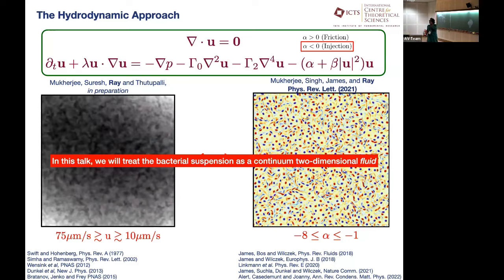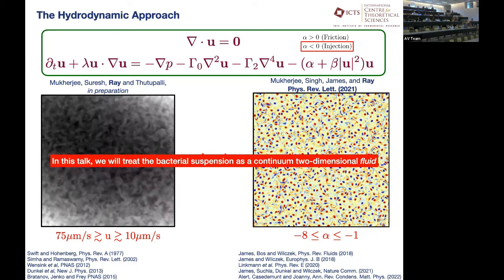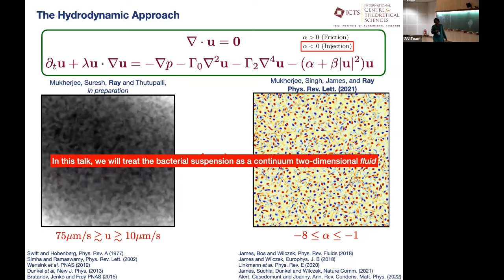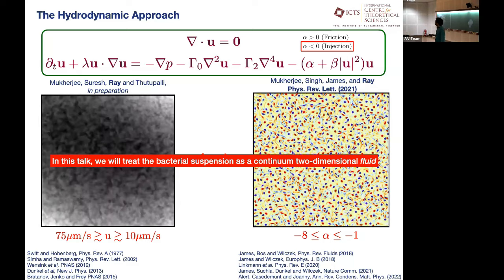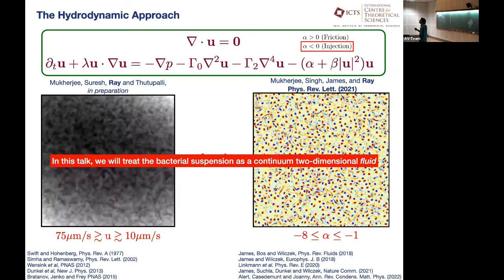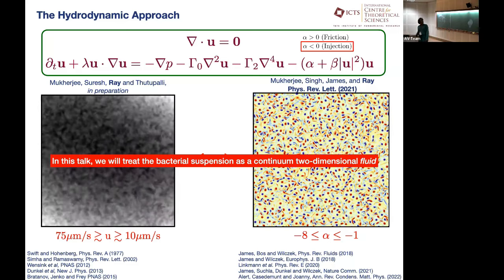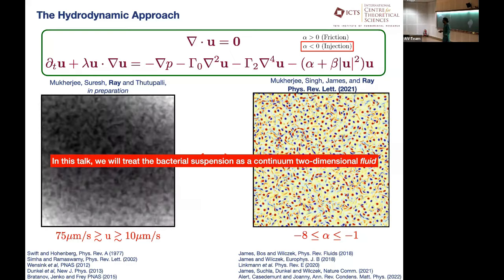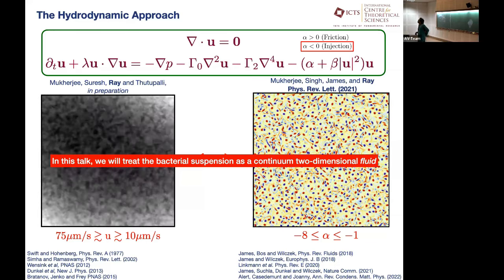The divergence of u equal to zero signifies that we are assuming the velocity field is incompressible. It's an assumption which seems to work when the suspension is quite dense. So for dense suspensions — and that's why I stressed the word dense — the incompressible constraint seems to be a good one. If we are dense, then density fluctuations are unimportant.